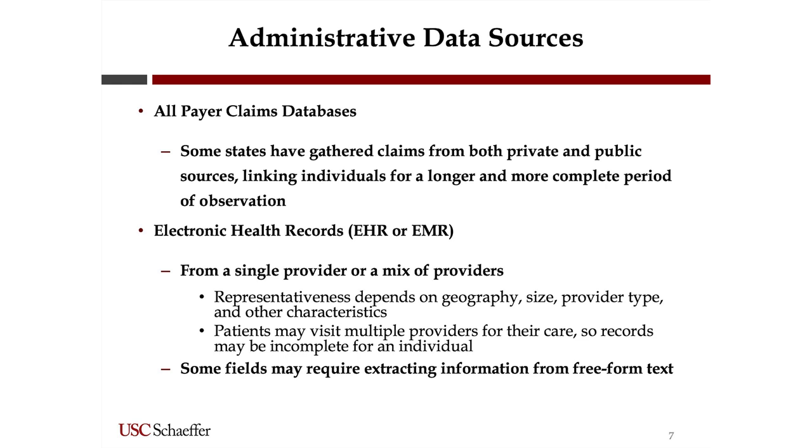Another form of administrative data is electronic health records. These can be from a single provider or a mix of providers. The representativeness of the sample depends on geography — where are these providers from? — and the type of provider. Also, keep in mind that patients may visit multiple providers from different networks, so you may not be seeing the full medical record — just one institution's point of view, with other visits missing.